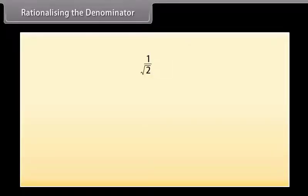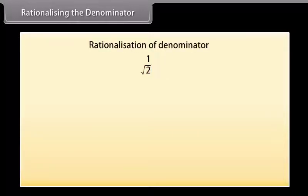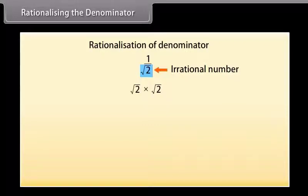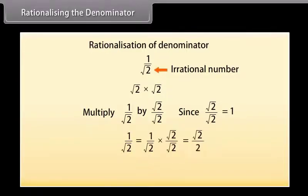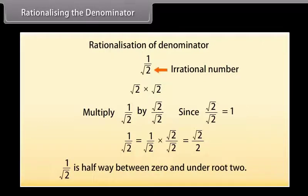Rationalizing the denominator. Now look at this number. It is difficult to tell its position on the number line, but if we can rationalize the denominator — that is, make the denominator a rational number — then we can easily tell its position. Since √2 is irrational, multiplying it by itself makes it rational. So we multiply 1/√2 by √2/√2 (which equals 1), giving us 1/√2 = √2/2. Now it is easy to locate 1/√2 on a number line — it is halfway between 0 and √2.